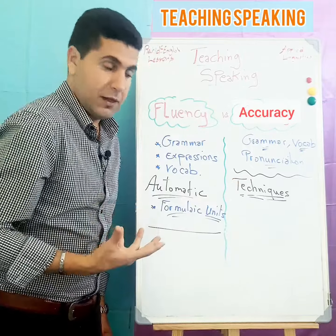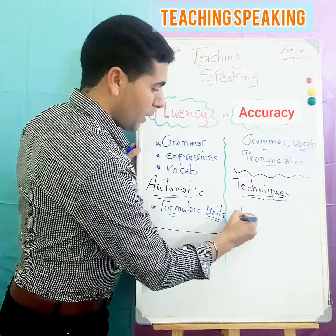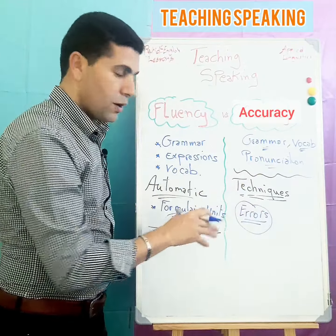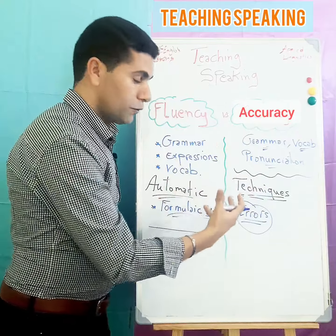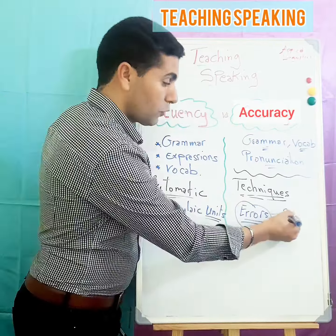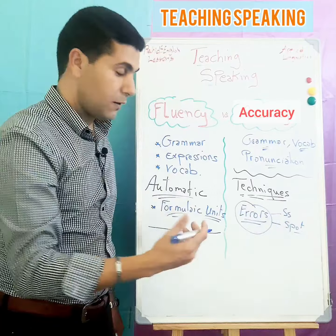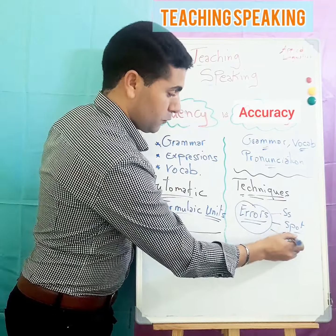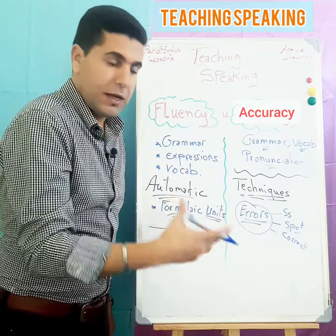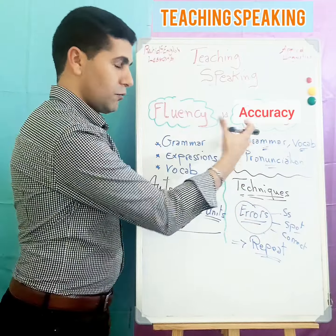For teaching accuracy in a speaking lesson, there are some techniques to enhance accuracy in the classroom. These techniques are mostly related to dealing with errors. For example, the teacher can give the speaker time to spot and self-correct their own errors, ask other students to correct the speaker's errors, or at the end the teacher can intervene to correct the student's errors.